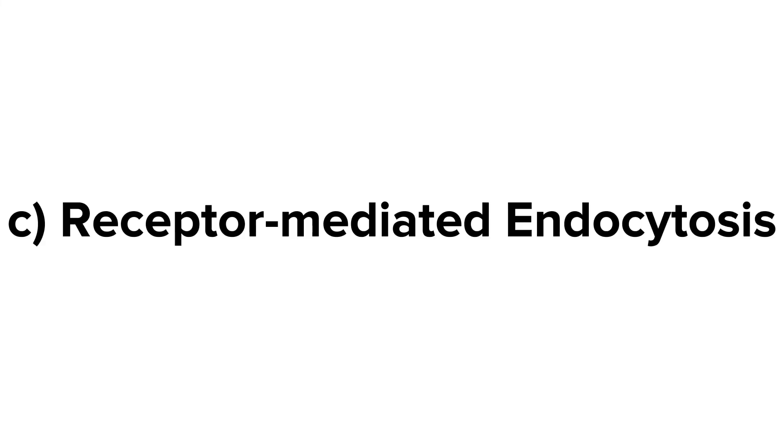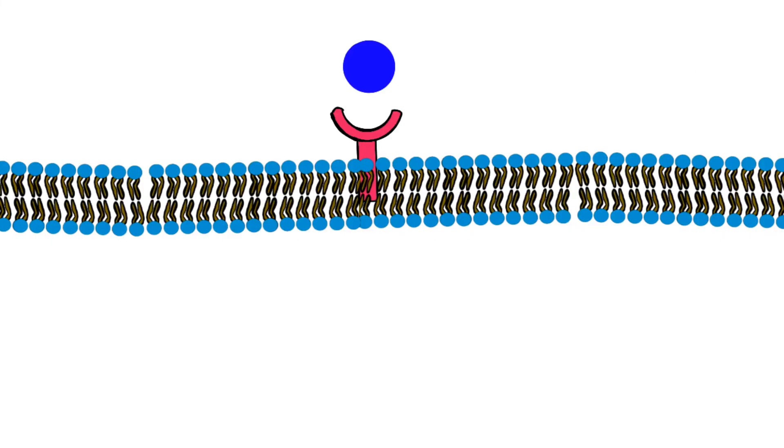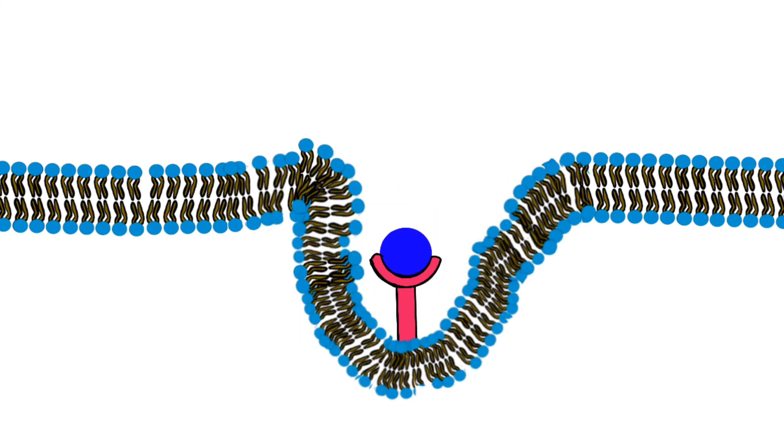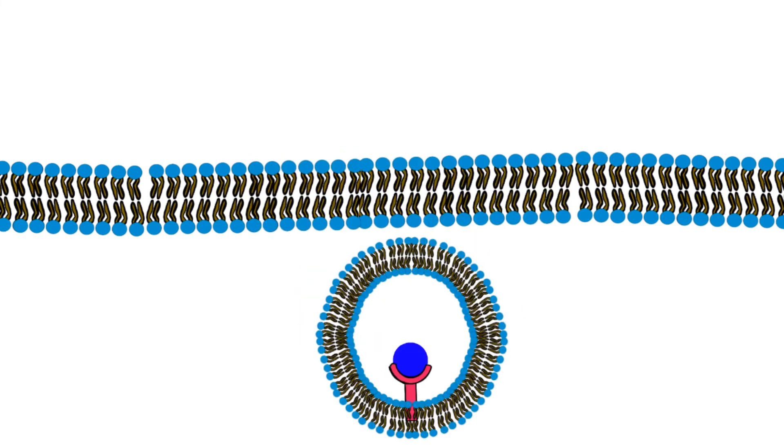The third type of active transport is endocytosis. When the molecules are very large and they are lipid insoluble such that they will not be able to pass through the membrane or any channel that facilitates the passage, they will bind to a specific receptor on the cell membrane.